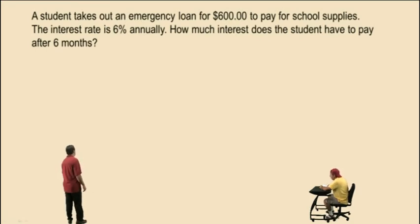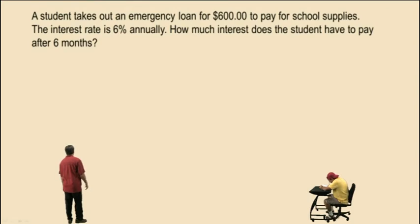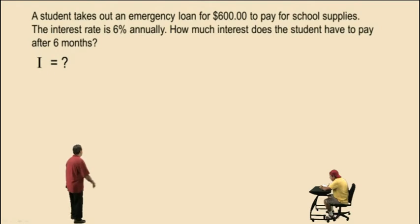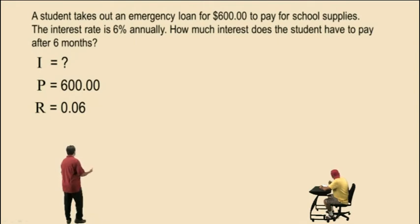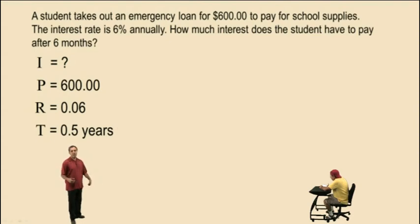Let's do another one. A student takes out an emergency loan for $600 to pay for school supplies. The interest rate is 6% annually. How much interest does the student have to pay after six months? Six months is half a year. P is the principal: $600. The rate is 6%, which converts to 0.06. The time in years is six months, so we'll use 0.5 for the years.